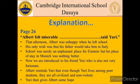Here we are introduced to his friend Yuri, who is also not very fortunate. Yuri reminds Albert that he should be glad about the fact that he has a room of his own, even though the neighborhood is not something he likes. In return, Albert reminds Yuri that even though Yuri lives among poor students, they are all civilized and non-violent. Yuri interrupts to correct him that not all of them have manners — only last week one was killed in a fight, and the one who killed him did not face any consequences except never being allowed to play a duel game.